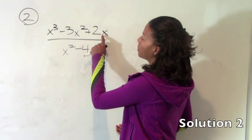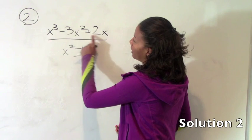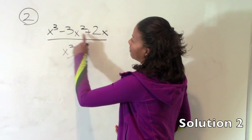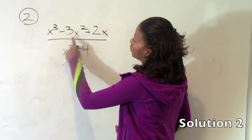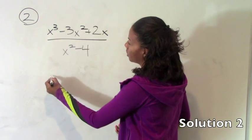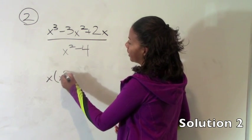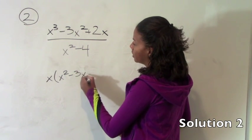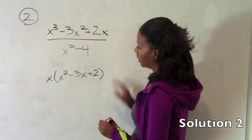So let's start with this numerator. There are actually two things we can do with the numerator. So the first thing you always want to do is see if there's a common factor that we can factor out. So what's the greatest common factor here? You'll see that every term has an x. So we can go ahead and factor that x out.